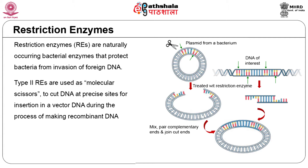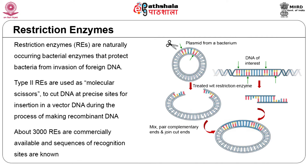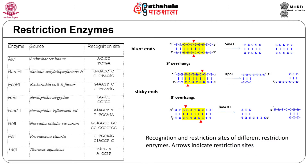There are three classes of restriction enzymes, which differ in the site of cleavage with reference to the recognition sequence. Type 2 restriction enzymes cleave the DNA within the recognition site and are used widely in genetic engineering. Over 3000 type 2 restriction enzymes with known recognition sequences are commercially available. Restriction enzymes require magnesium as a cofactor and a specific pH and salt concentration for their activity.